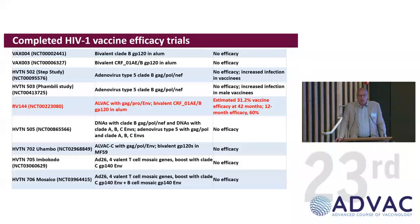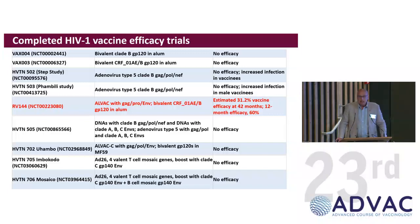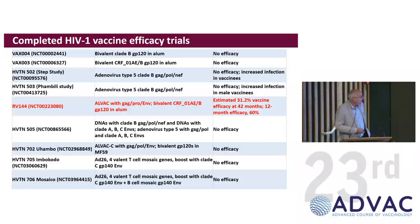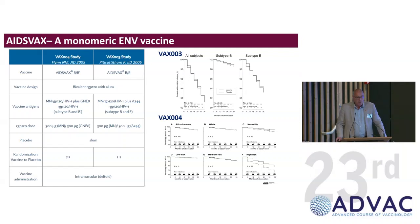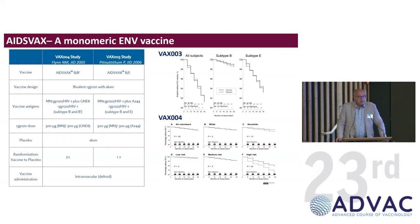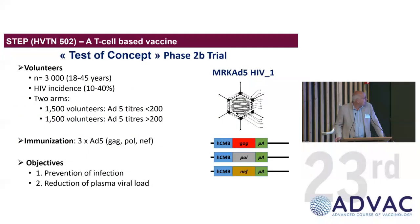HIV vaccine development has had very little or no success so far. We had nine efficacy trials completed, and in this table you can see that only one may have indicated some clues for protection. We start with the first trial, which was initiated in the late 1990s and was based on a recombinant monomeric glycoprotein that induced very poor neutralizing antibodies and no success at all. Because of the lack of efficacy of antibody-based vaccines, the community at that time completely shifted to new concepts.